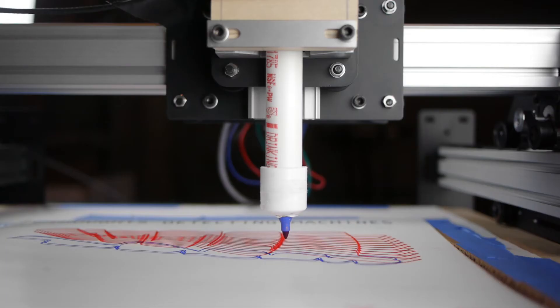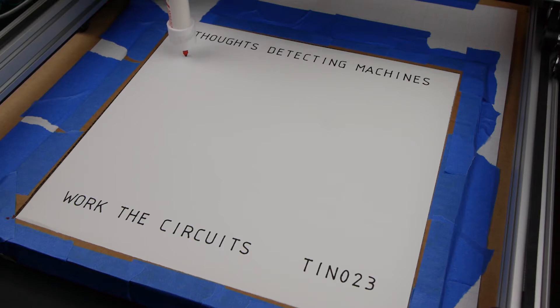So then I send the artwork to this ShapeOco computer-controlled milling machine that I fitted with a pen mount, and it draws the curves directly on the record sleeve.